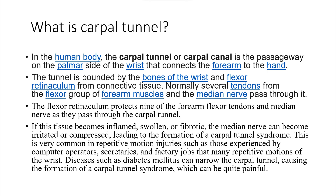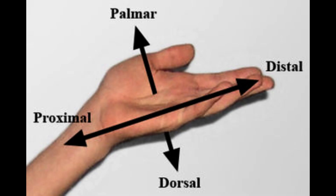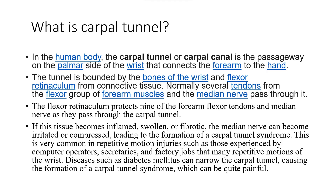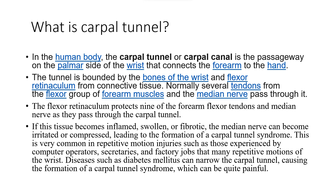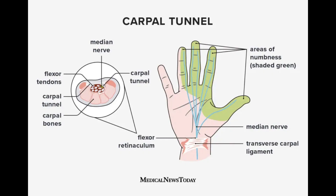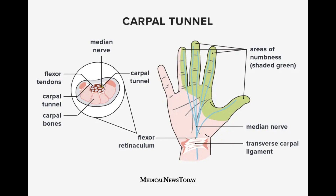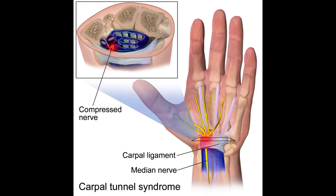So let's start with: what is carpal tunnel? In the human body, the carpal tunnel or carpal canal is the passageway on the palmar side of the wrist that connects the forearm to the hand. The tunnel is bounded by the bones of the wrist and flexor retinaculum from connective tissue. Normally, several tendons from the flexor group of forearm muscles and the median nerve pass through it. The flexor retinaculum protects nine of the forearm flexor tendons and the median nerve as they pass through the carpal tunnel. If this tissue becomes inflamed, swollen, or fibrotic, the median nerve can become irritated or compressed, leading to the formation of carpal tunnel syndrome.